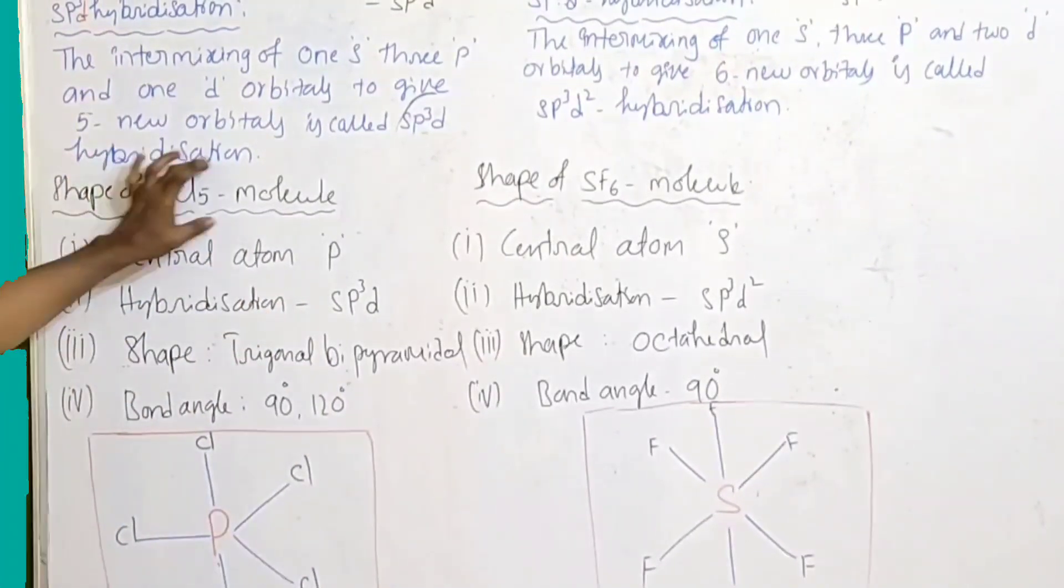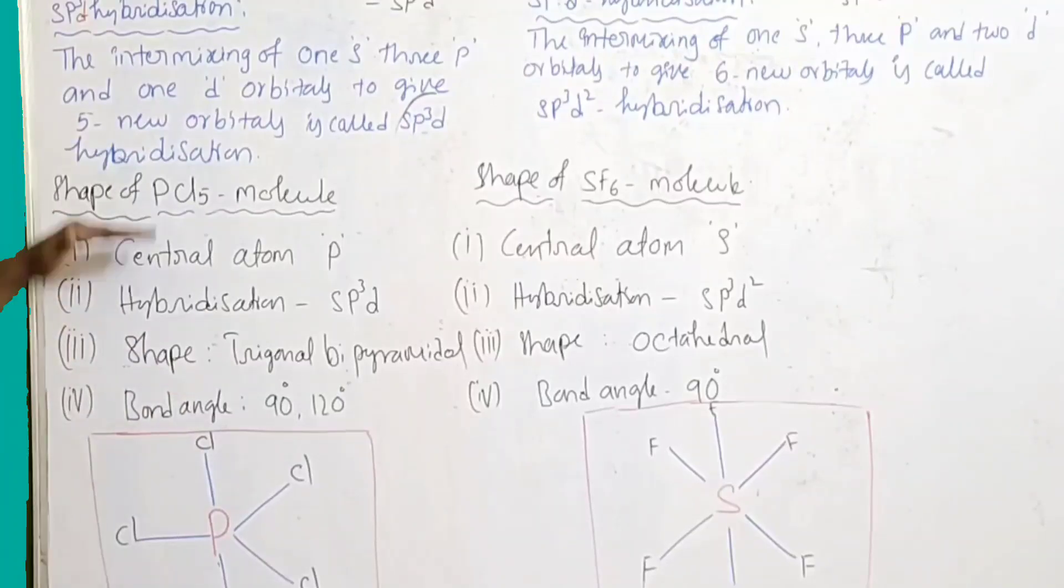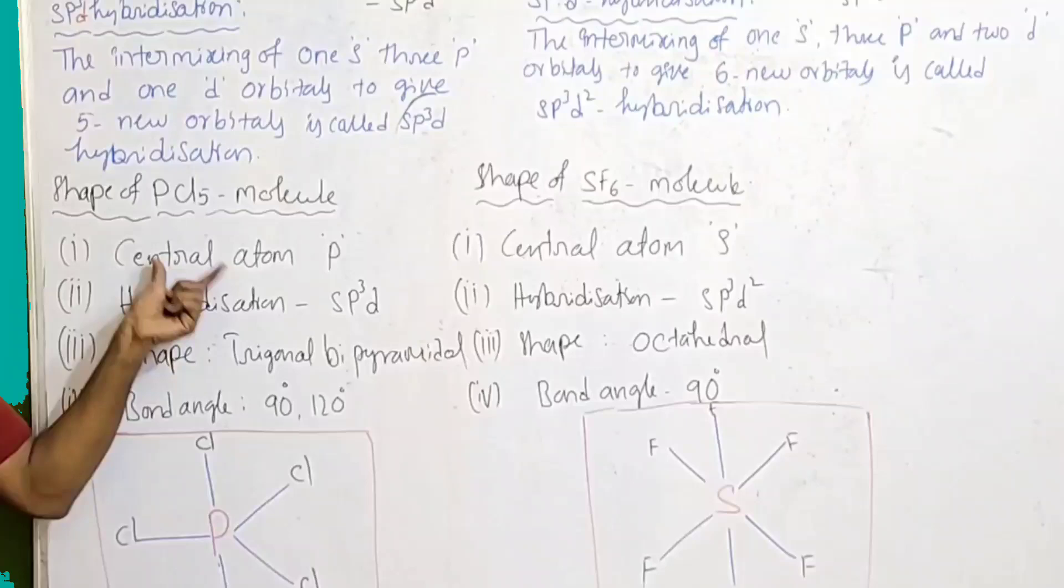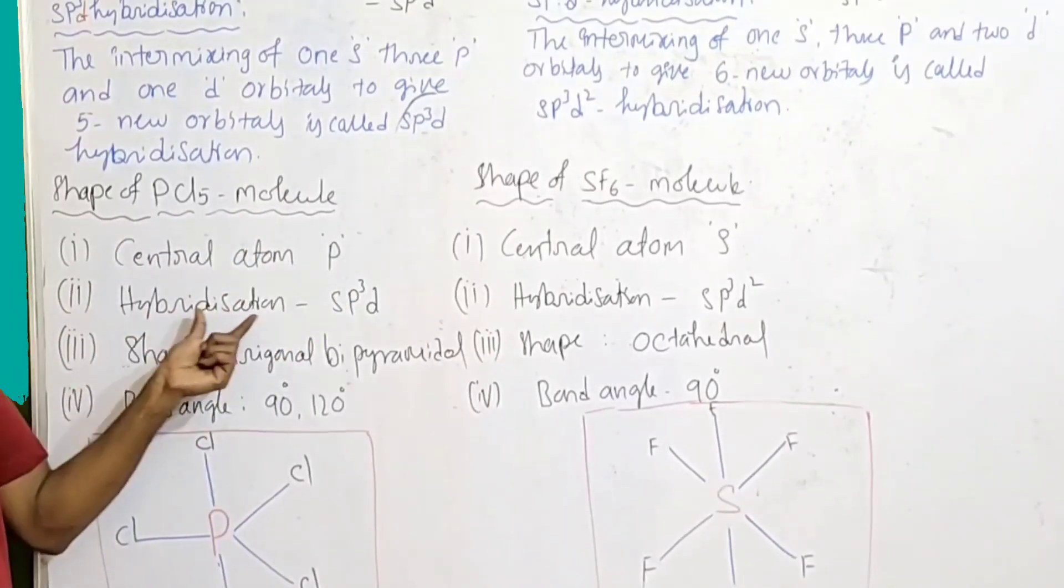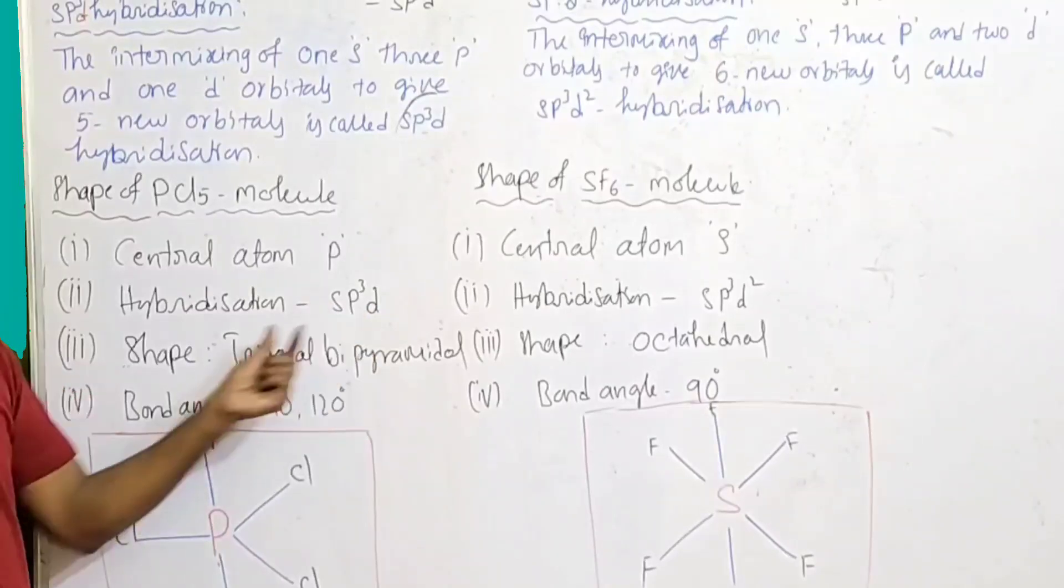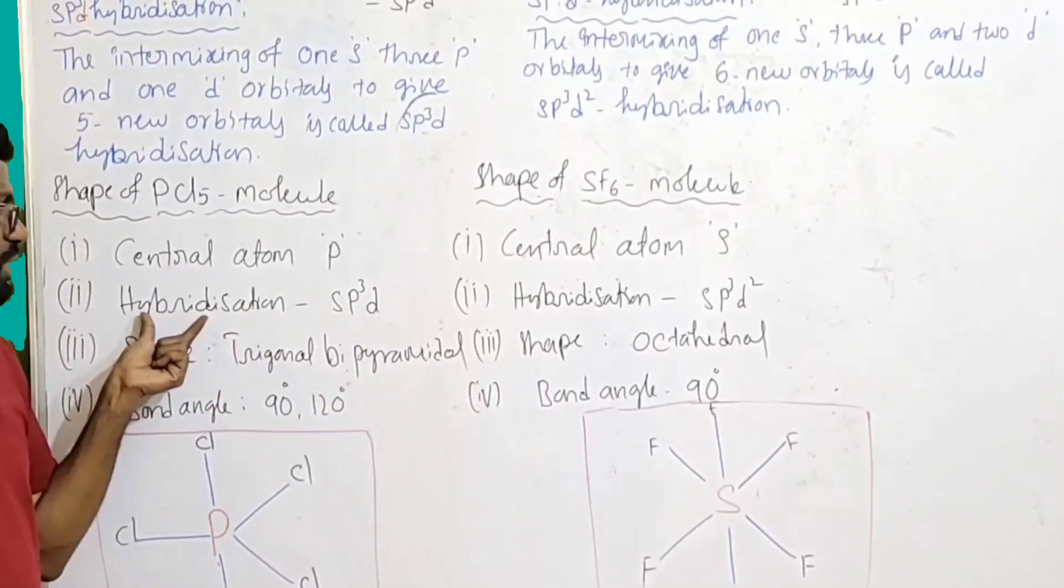Now come to the shape of PCl5 molecule. First point: central atom. In PCl5 molecule, the central atom is phosphorus. It undergoes sp3d hybridization.